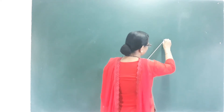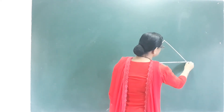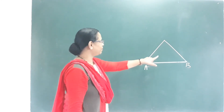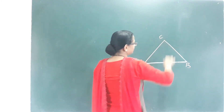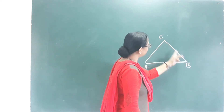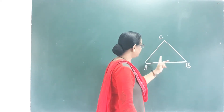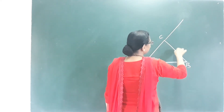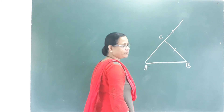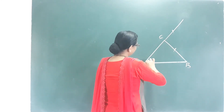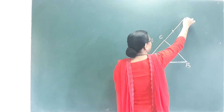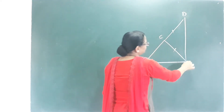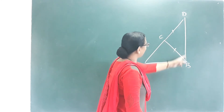We have a triangle A, B, C. In this triangle, BC is the length. I am going to join to this same length — extending AC to D, where A is extended to D. I join D and B. Now we have a triangle called A, B, D.